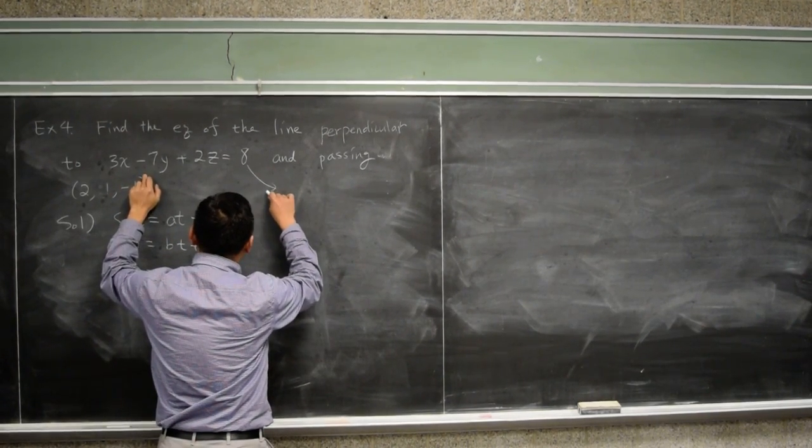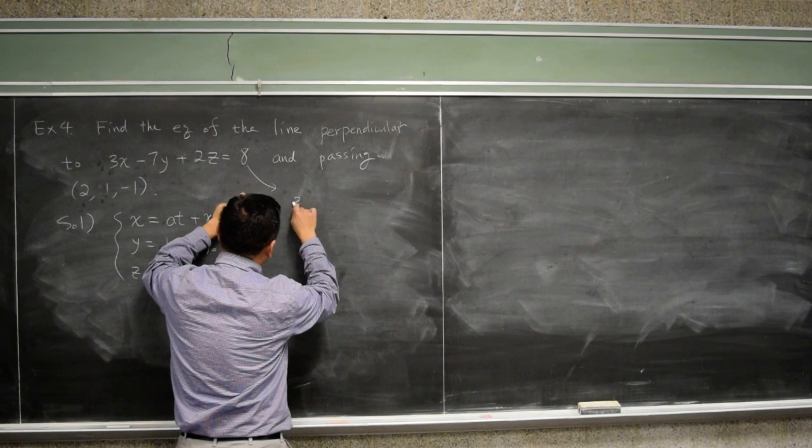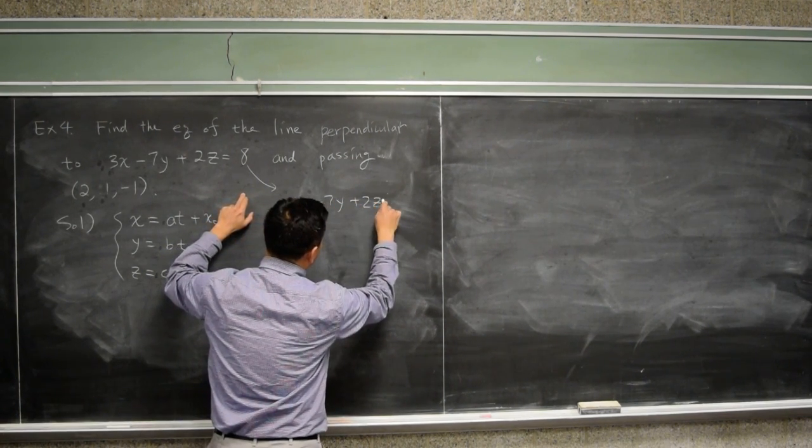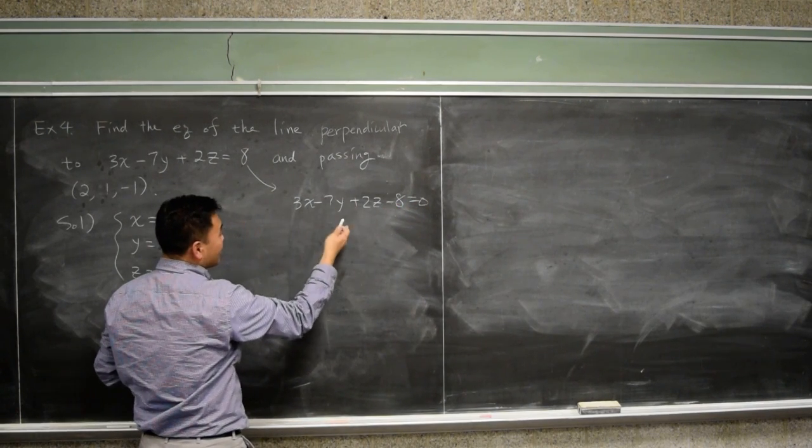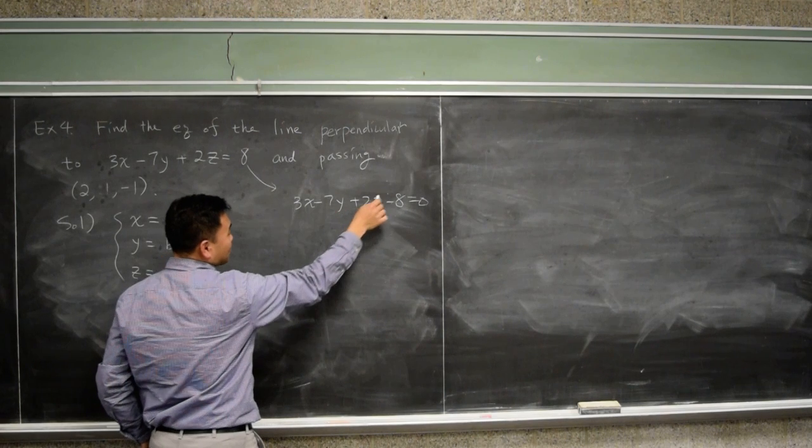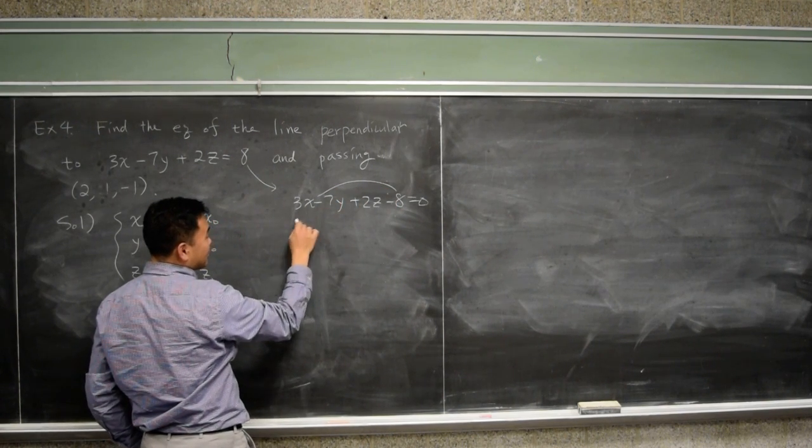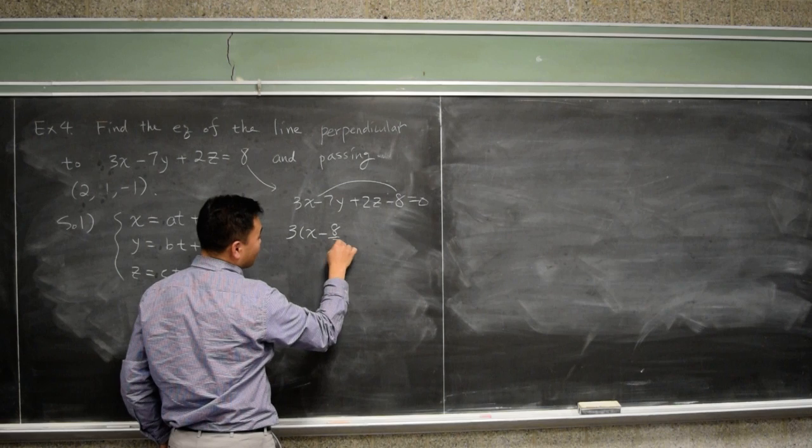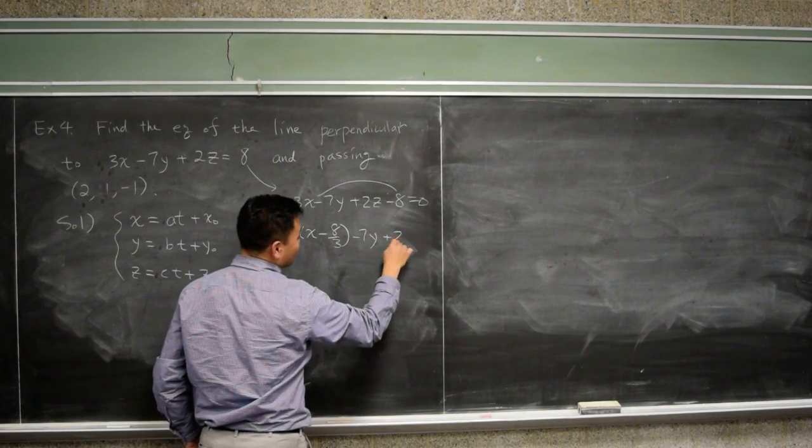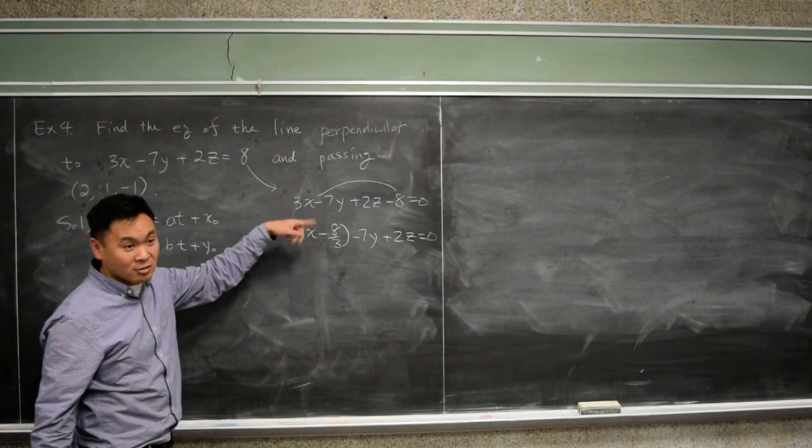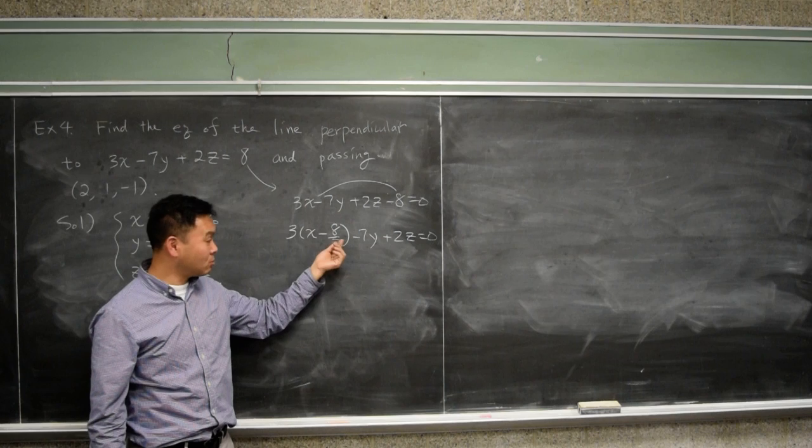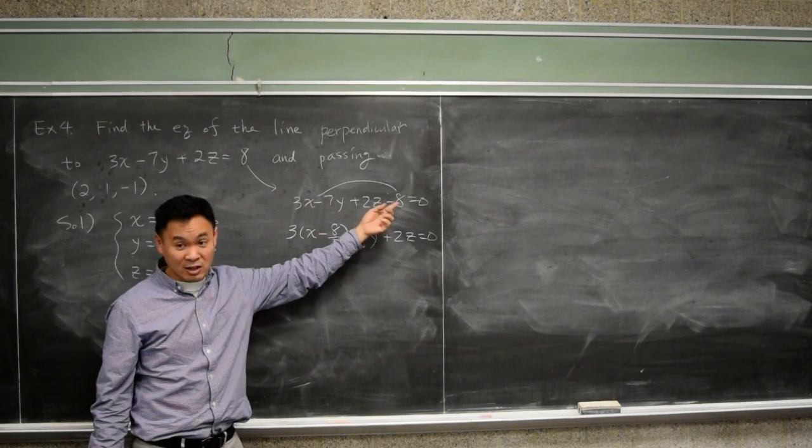And then just make this contained in any of X or Y or Z as parenthesis. So if I just put it along with X, I can rewrite this: 3 times X minus 8 over 3 minus 7Y plus 2Z equals to 0. These two are the same thing, right? If you multiply 3 out, 8 over 3 times 3, the 3s cancel and you just get negative 8. It's the same thing.